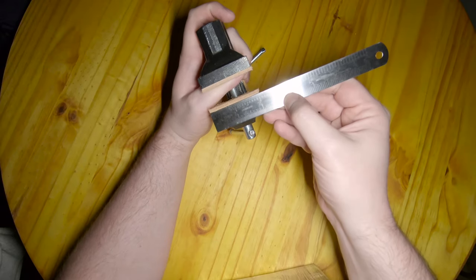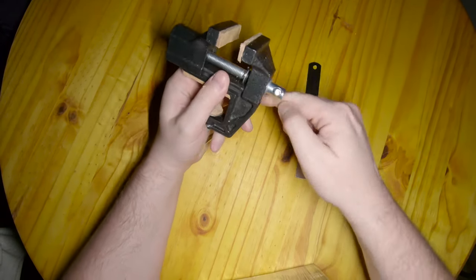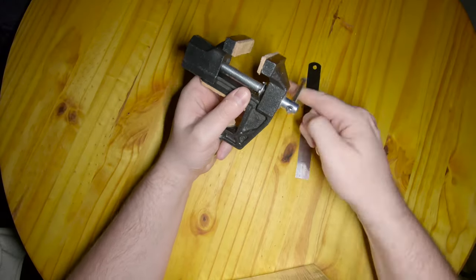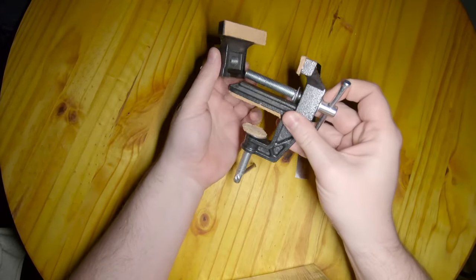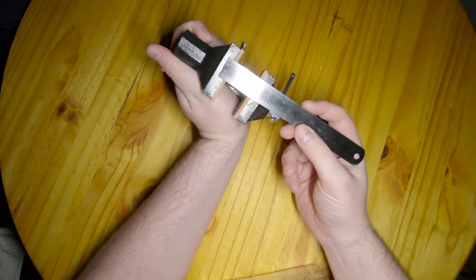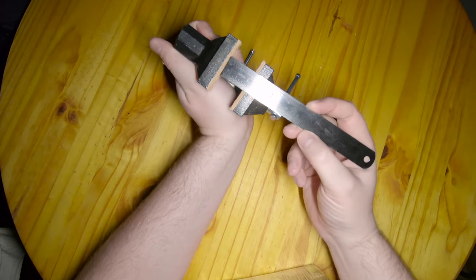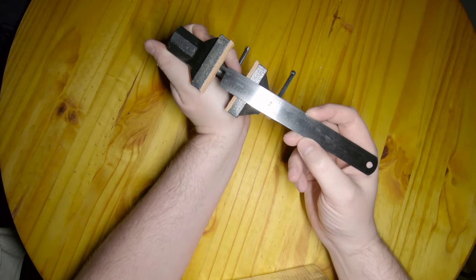So the width of the jaws is about two inches, and the maximum opening you can get out of this guy before the rear just completely falls off like that is only about an inch and a half. Which is even less with my little leather pads on here.